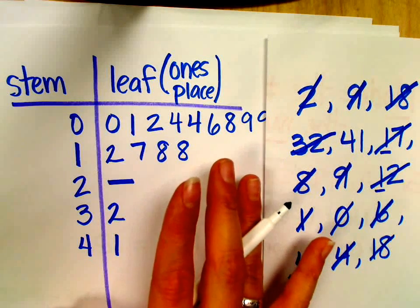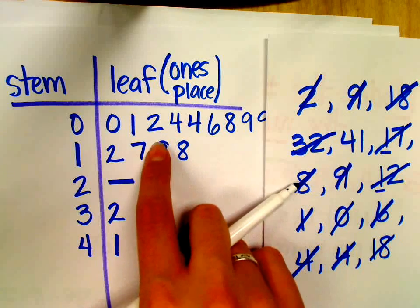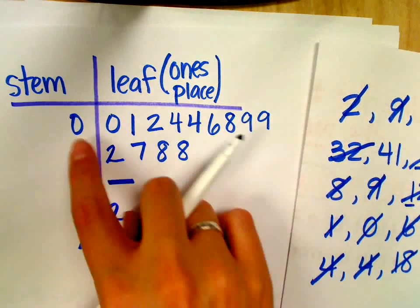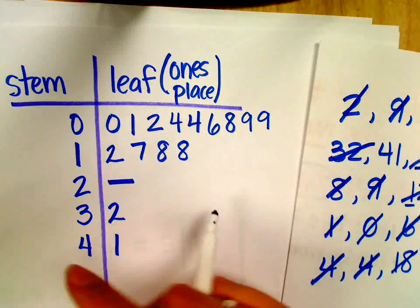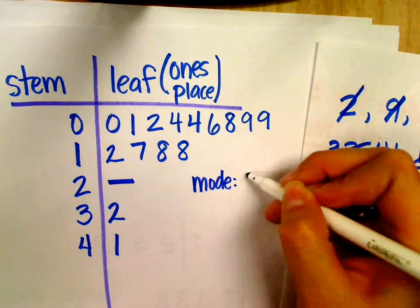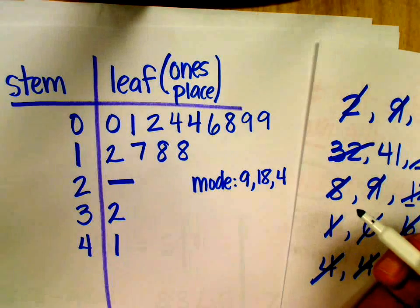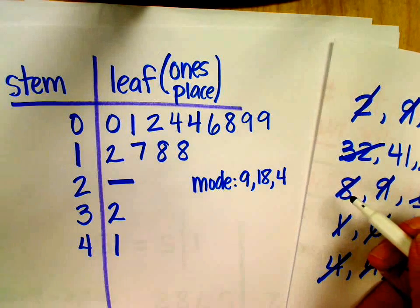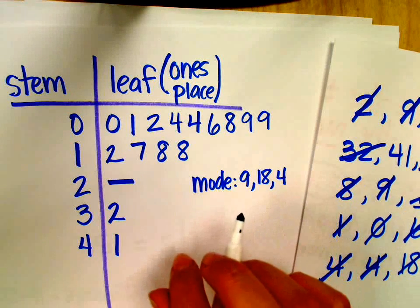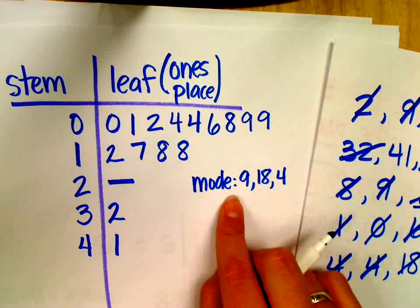And then I'm finished with my stem and leaf plot, but then they'll ask me questions like find the mode, which is kind of easy because I can look and see, well, I have two eights there, which is eighteen, and I have two nines here, which a zero and a nine is just nine. So, what would be my mode? Nine and eighteen. Yeah. Two fours. Oh, and there's two fours. Good. So, mode is nine, eighteen, and four. Four. What about the other eight? Oh, I didn't want to miss the four. Okay, so, I'm asked the mode. I figured that out.